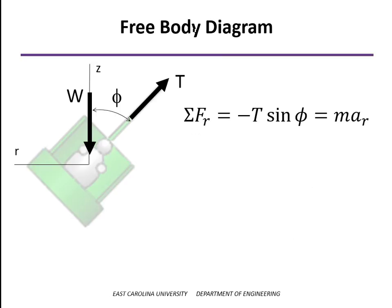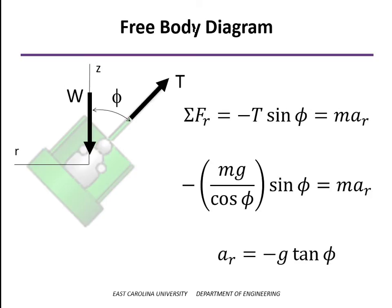In the radial direction, we have only a component of the tensile force, which acts inward. And so that would be equal to the mass times the radial acceleration. So substituting in the equation for the tension that we found on the last slide, you can see that the mass will cancel. So the acceleration is going to be independent of the mass. The tension, of course, will be dependent on the mass, but the acceleration will not. And so we come up with this expression for the acceleration in the radial direction.